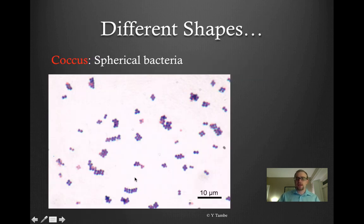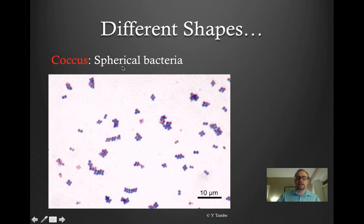The next way we can classify bacteria into general groups is based on their shape. The first type we can talk about is called coccus bacteria. Coccus bacteria are spherical bacteria — basically tiny little spheres. You can see here that they are basically ball-shaped.